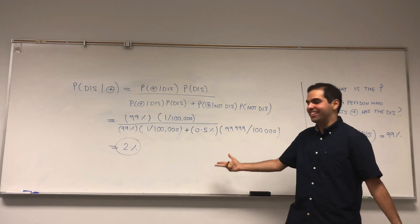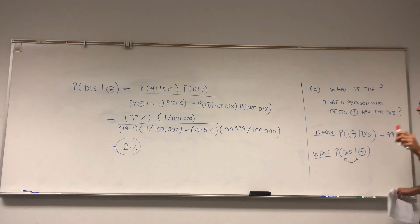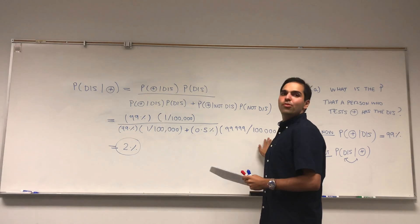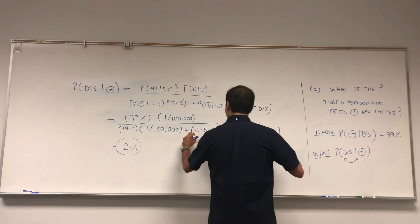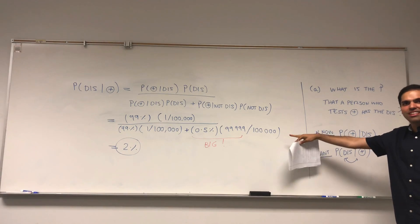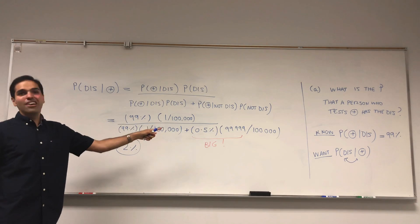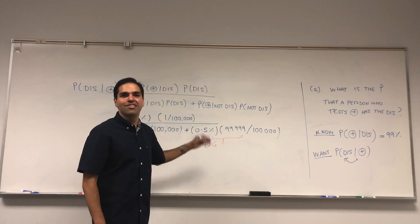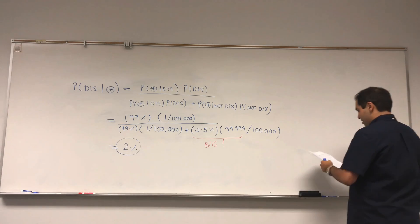Isn't that interesting? It's a pretty crappy test — if you test positive there's actually just a 2% chance of having the disease. It is pretty paradoxical, but the reason is there are a lot of people who don't have the disease, so saying the test is wrong 0.5% of the time is actually a pretty big number. Don't be fooled just because it's 0.5% — if you have lots of people affected by it, it's actually huge. If it were a really good test, this would be more like 0.005%.